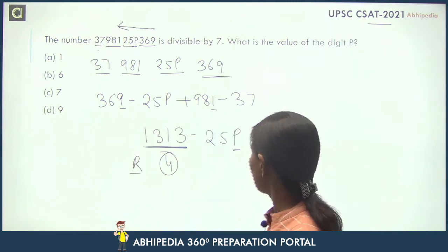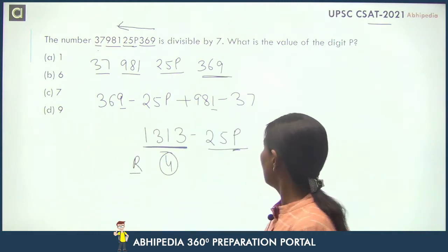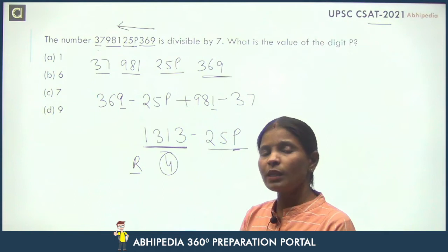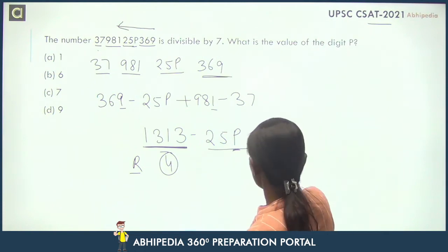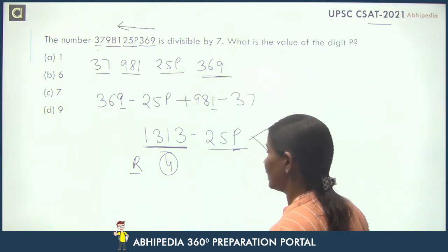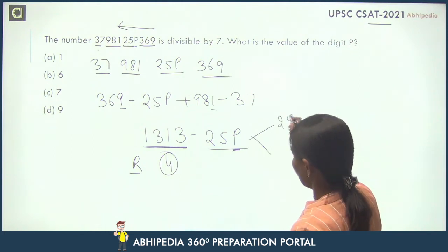And if we see 25P, three digit numbers divisible by 7, there are two numbers: 252 and 259. Both are divisible by 7.